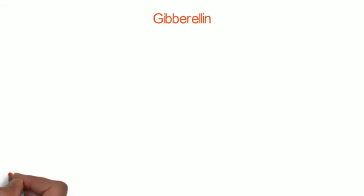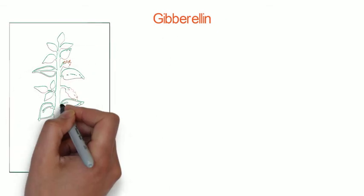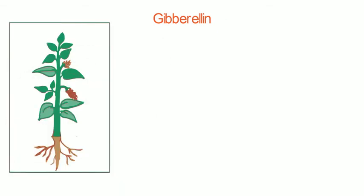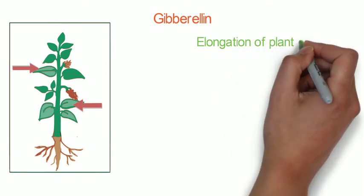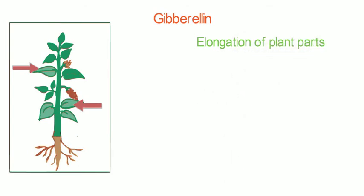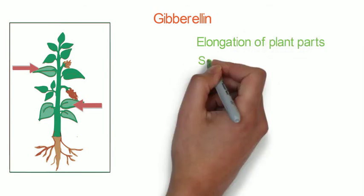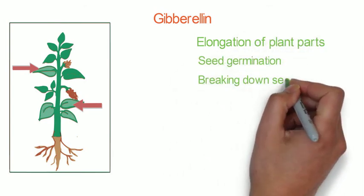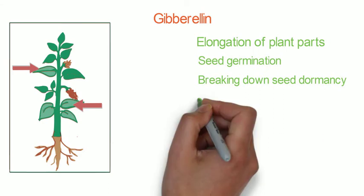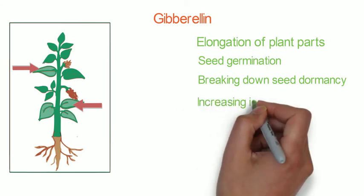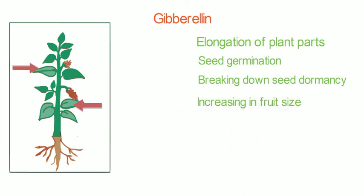The third plant hormone is gibberellin. It is synthesized in plastids and modified in the endoplasmic reticulum. It is mainly concerned with elongation of plant parts and breaking down dormancy of seeds. Fruit formation is also among the other functions of gibberellin.